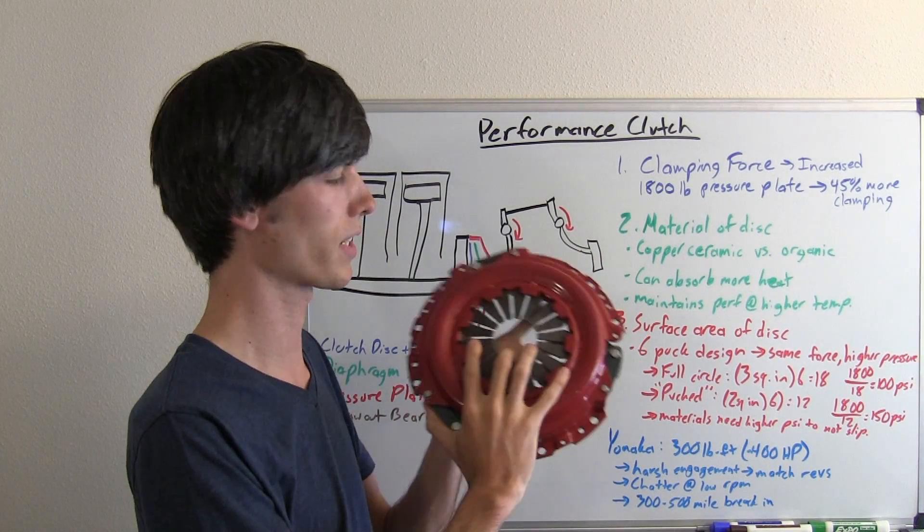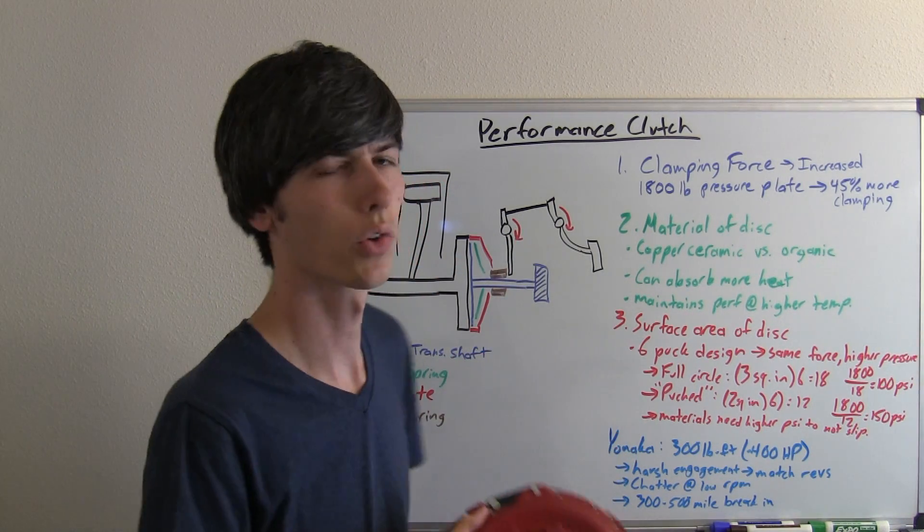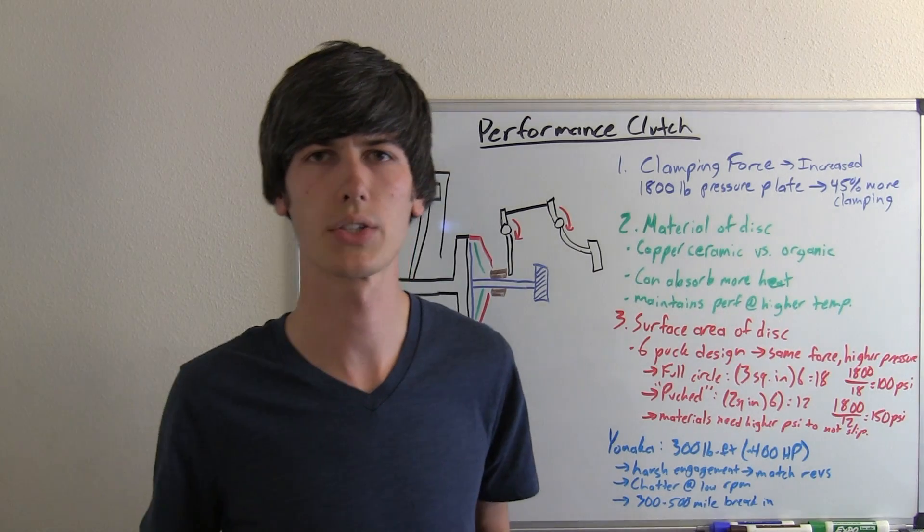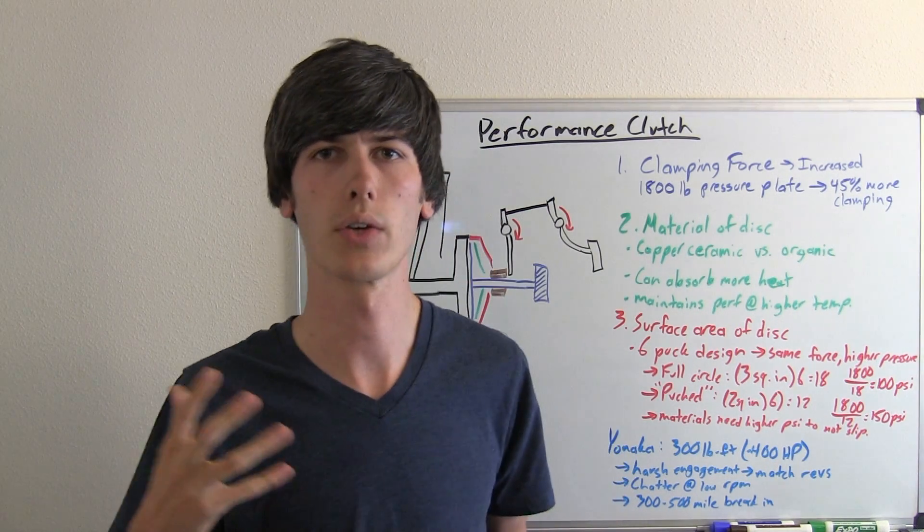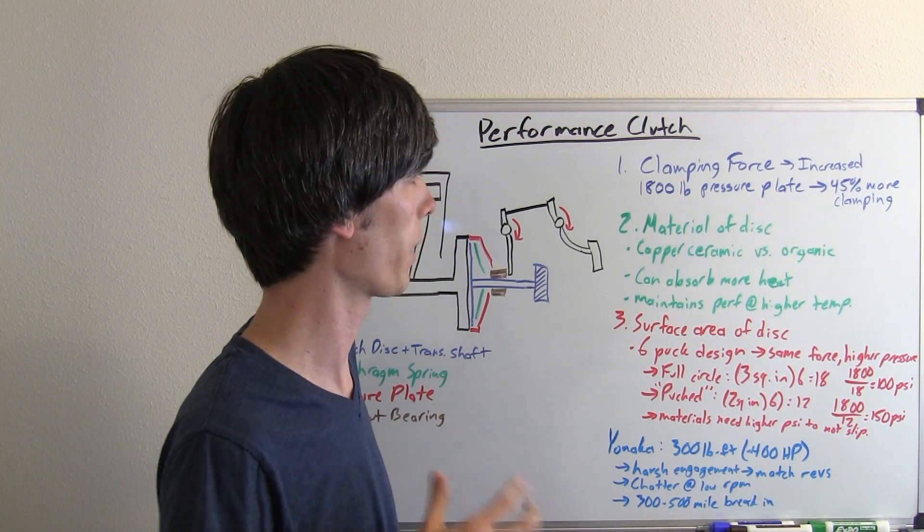So the clamping force of this diaphragm spring is going to be much greater on a performance clutch in order to transfer more torque. So if you haven't watched my video on multi-plate clutches, I kind of explain how you can calculate the amount of torque that a clutch can pass through the transmission.